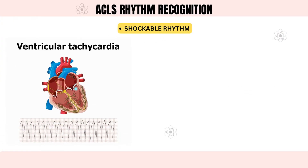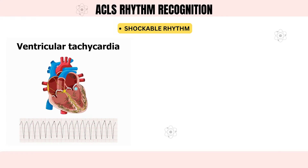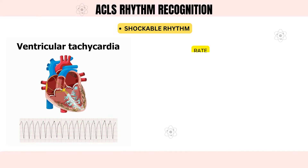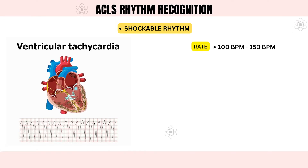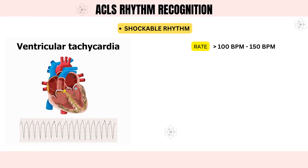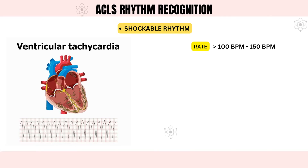Shockable rhythms include ventricular tachycardia and ventricular fibrillation. First, ventricular tachycardia, or VT, is an abnormal cardiac rhythm characterized by unusually quick heartbeats. A heart in ventricular tachycardia normally beats more than 100 times per minute, or even more than 150. VT is generated by abnormal electrical impulses in the lower chamber of the heart, or ventricle.